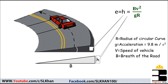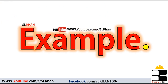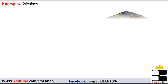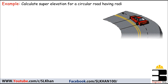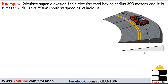Now in order to determine the full super elevation, we will solve a problem. We are asked to calculate the full super elevation for a circular road having radius equal to 300 meters and width 8 meters. We are also informed to take 50 km/h as the speed of the vehicle and centrifugal ratio equals 1/10.